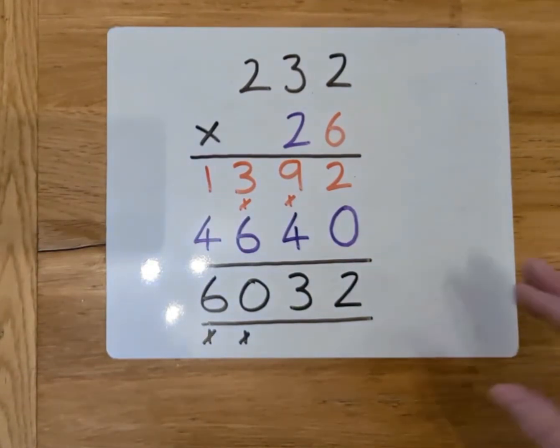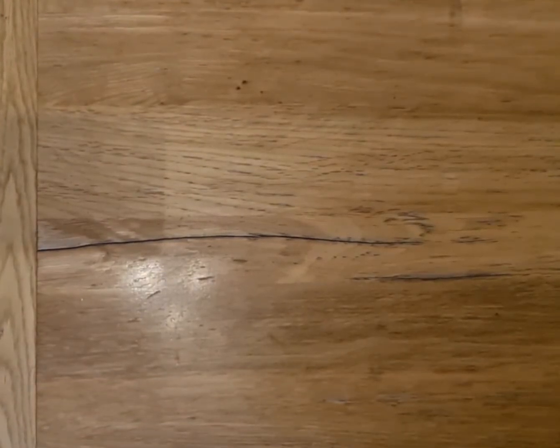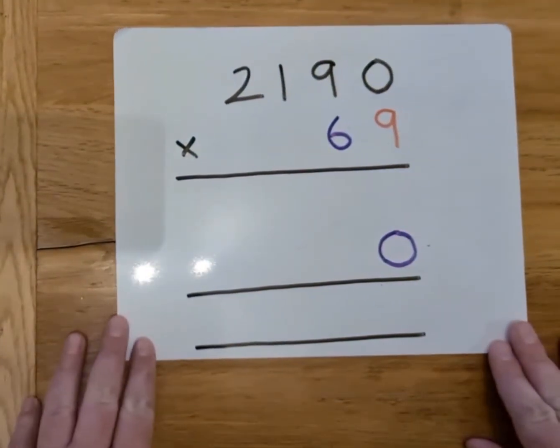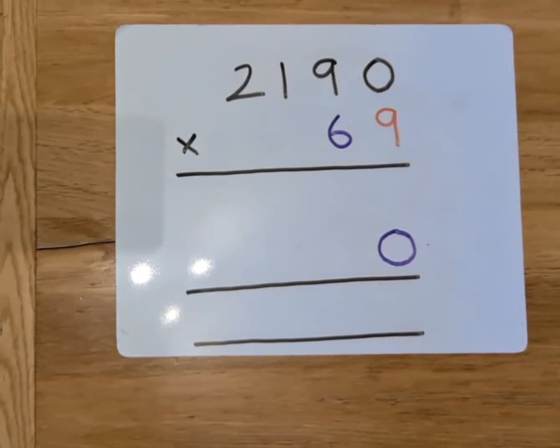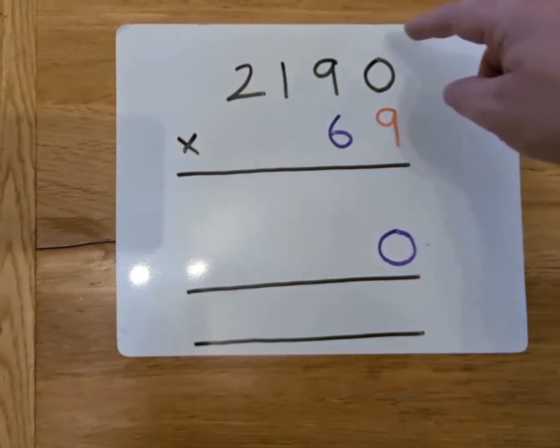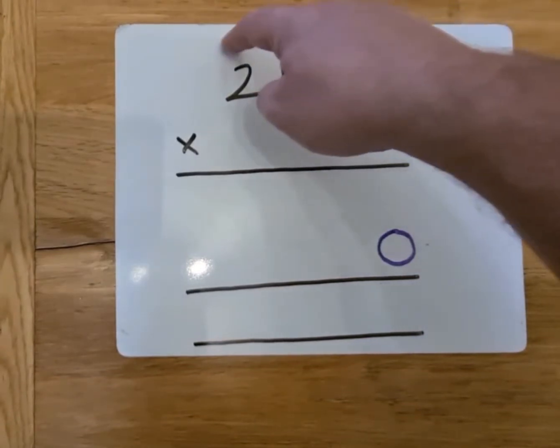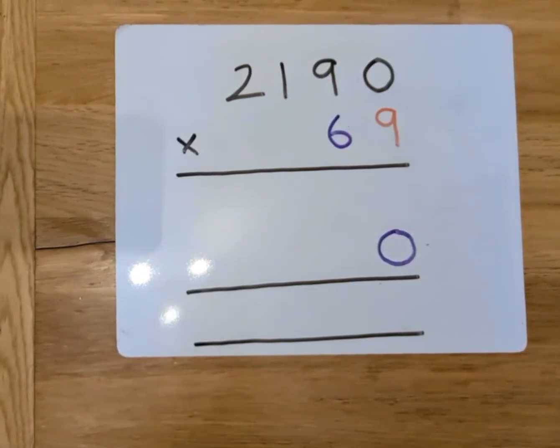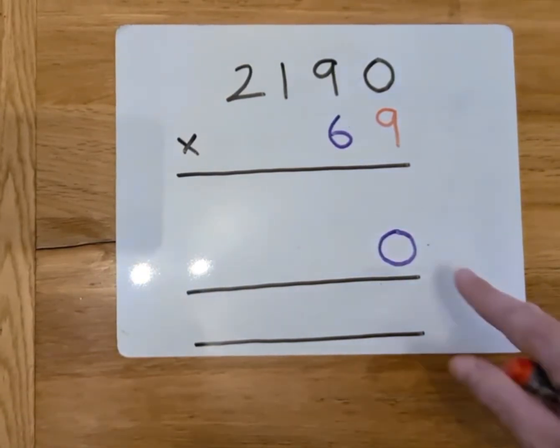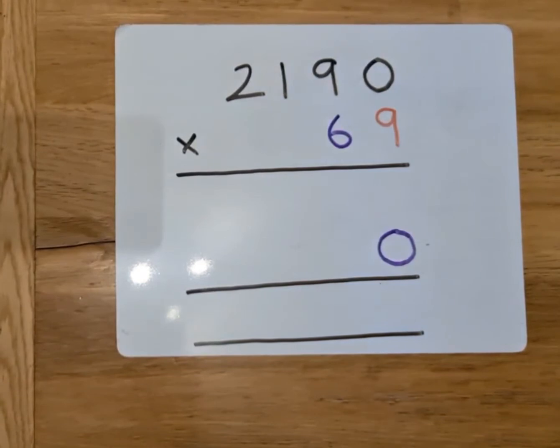Now, if we're multiplying numbers by thousands, we still carry on with the same process. So having a look at this question, it's a 4-digit number by a 2-digit number. But remember, the method never changes. So we're just going to multiply the 9, in this case, by every number on that top row. And once we've got to the 2 and finished, that's when we'll move on to the tens. So, you can see I've put my magic zero in already, because I know I'm going to need that when I get to multiplying the tens.